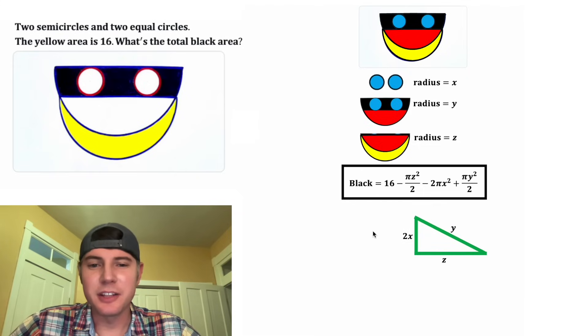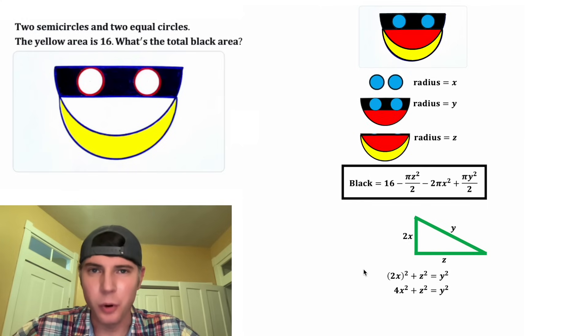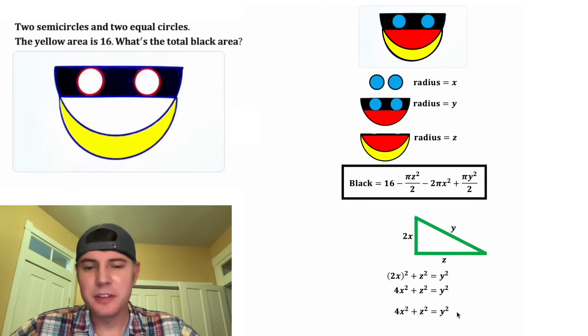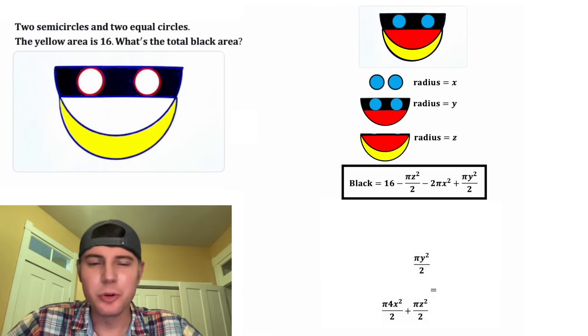Let's do the Pythagorean theorem. It'll give us the quantity 2X squared plus Z squared is equal to Y squared. This squared will distribute to both of these factors, giving us 4X squared. And let's copy this down, and let's multiply everything by pi, and then divide everything by 2. And now we have another cool-looking equation.